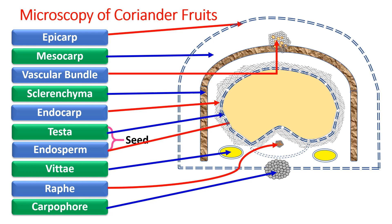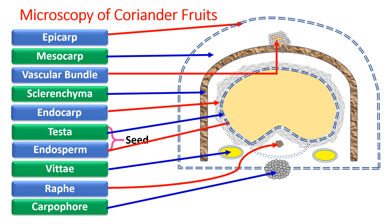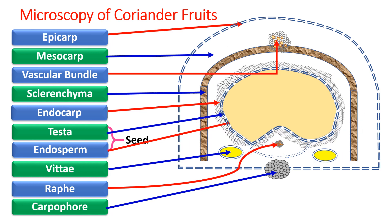Besides these, they also have vitae, which are located in the mesocarp region. Coming to the endocarp — again very similar to fennel fruits — the endocarp cells are arranged in a parallel way, so they are called parquetry arrangement. The cells adjoining each other are parallel, and a group of cells is parallel, but not necessarily all cells are parallel to every other group.